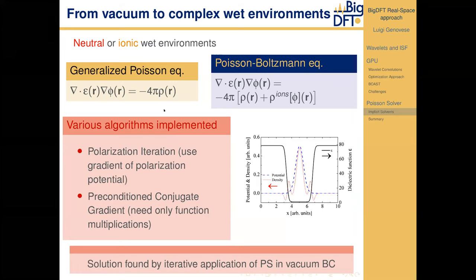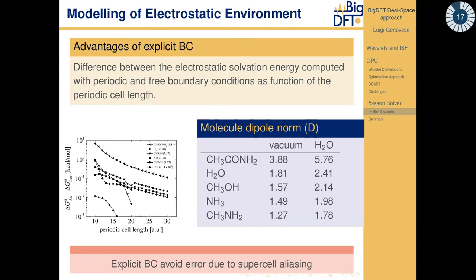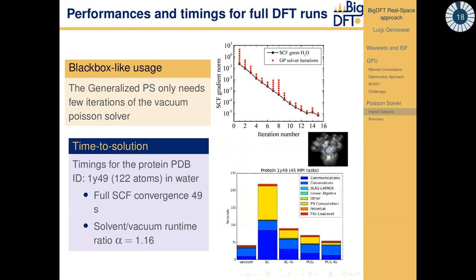We employ a preconditioned conjugate gradient algorithm able to find the solution of the generalized Poisson equation in a cavity, expressed efficiently in the interpolating scaling function basis. This enables non-trivial boundary conditions in the solution of the Kohn-Sham problem. Polarizable systems as well as systems in non-fully periodic boundary conditions can benefit from this treatment, with a time to solution compatible with vacuum calculations. With a hundred-atom system we could reach the self-consistent cycle solution with small overhead relative to the full vacuum solution.